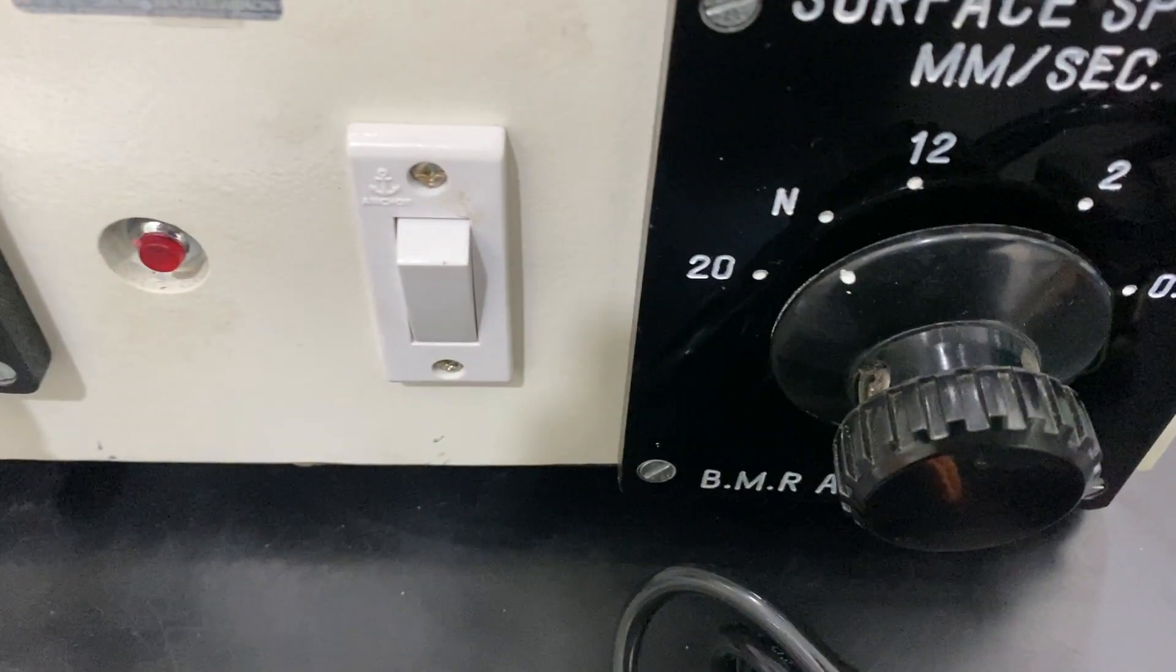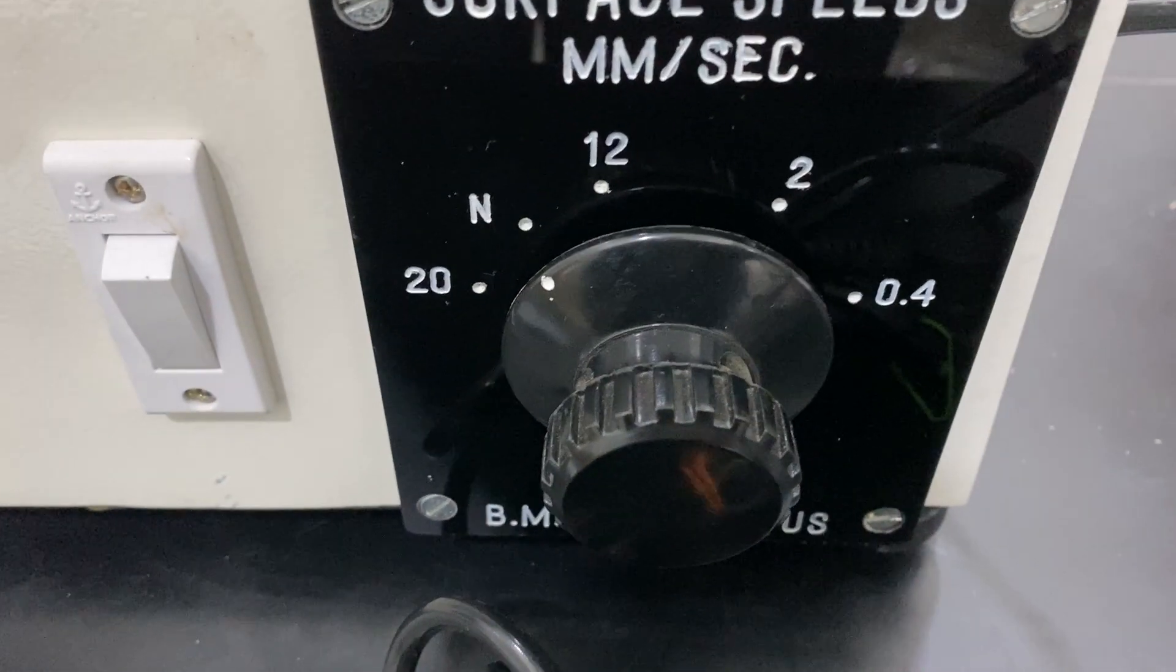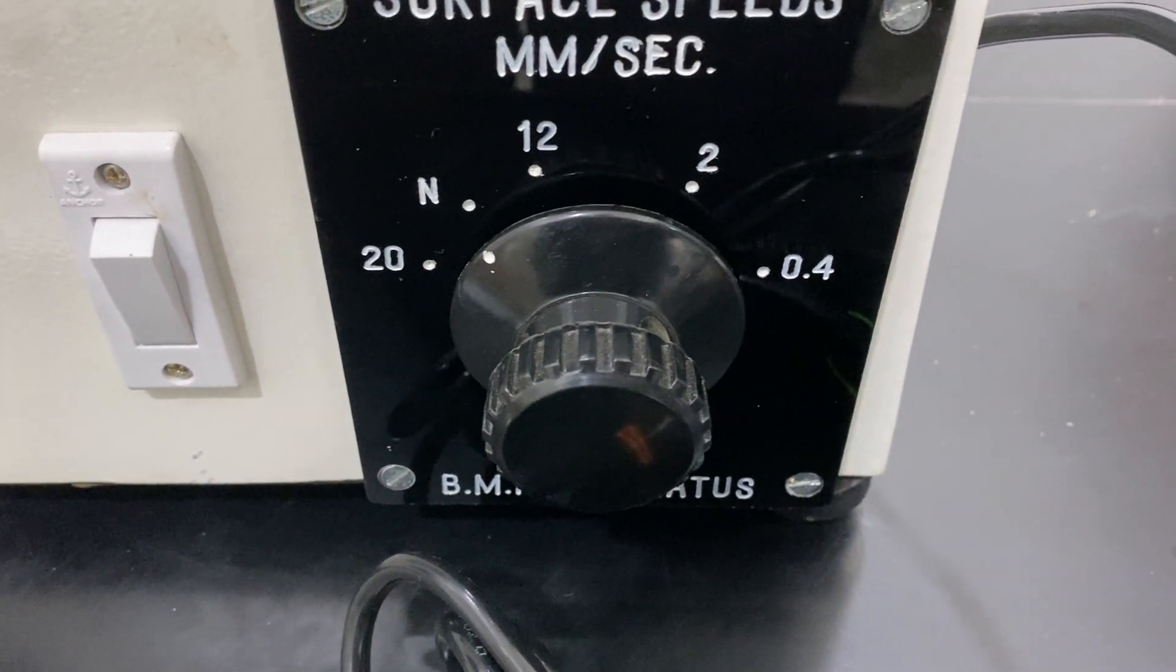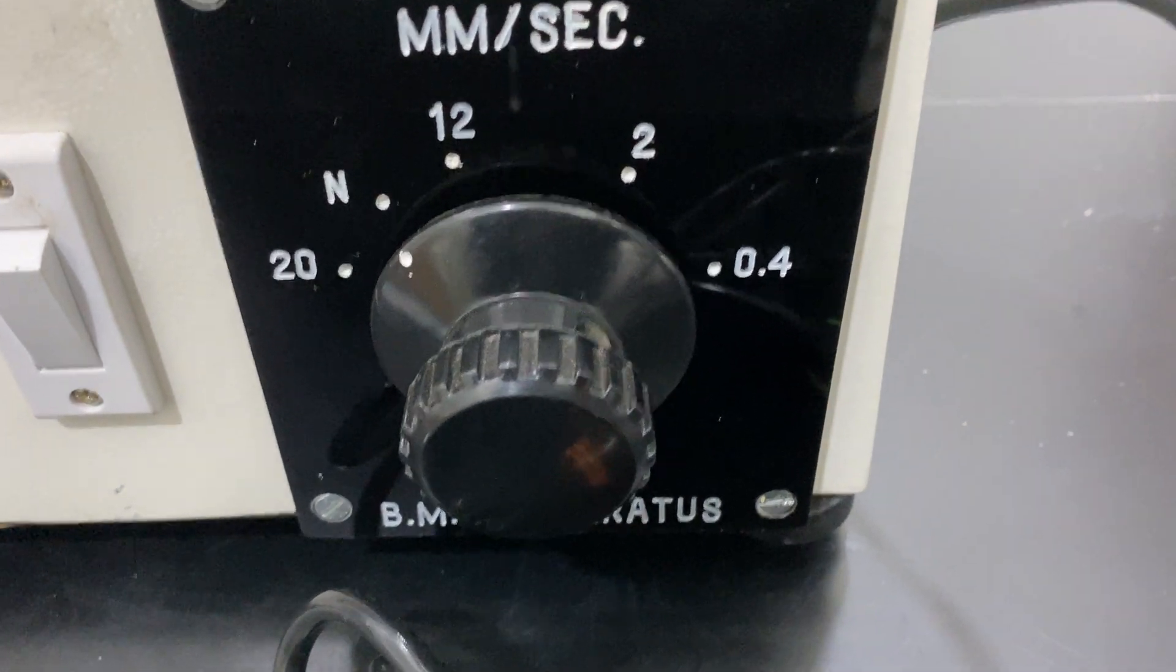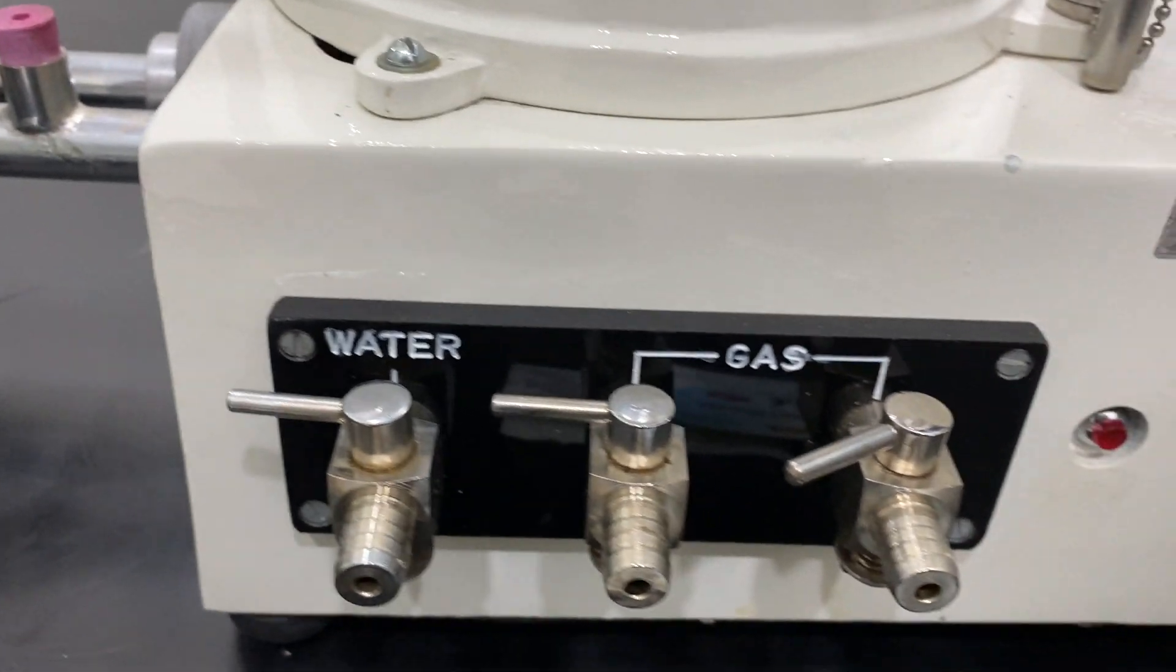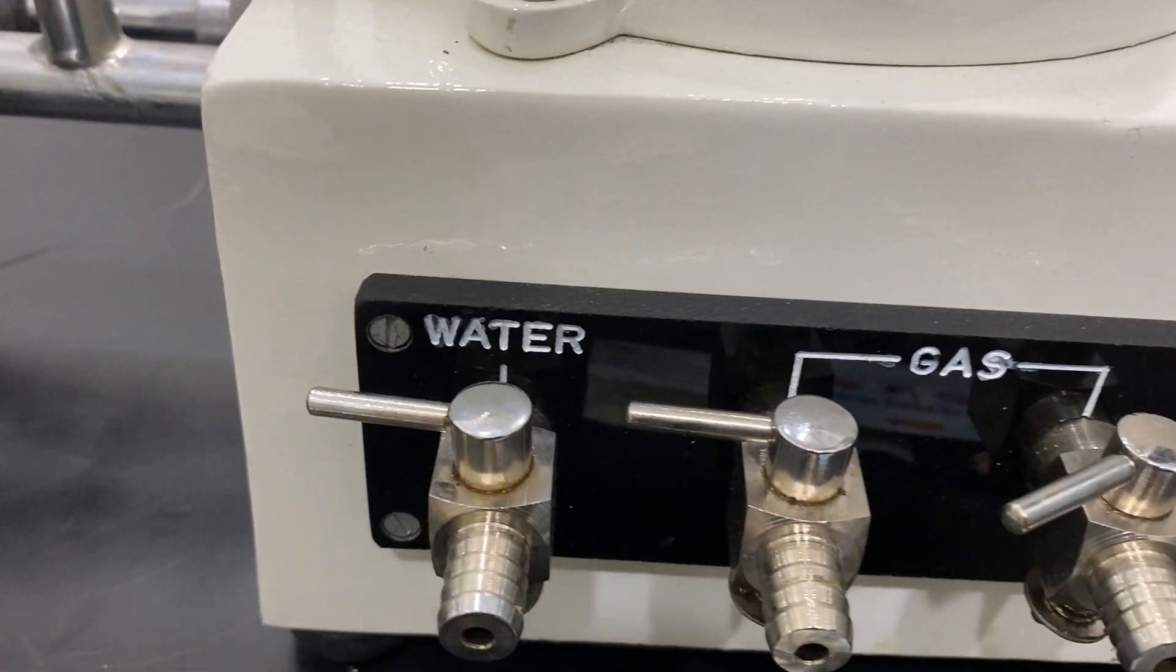These are surface feed settings in millimeters per second, with neutral, 12, 2, and 0.4 on the BMR apparatus. There is an input and output for gas and water.